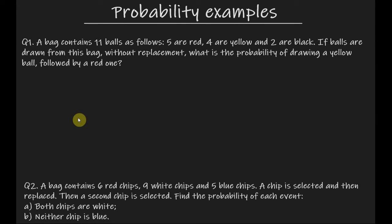Welcome everyone! In this video we will go through three different examples based on probability. The probability of an event is a real number in the range of 0 to 1, where a probability of 0 is assigned to an event that is impossible and a probability of 1 for a certain event. Let's get started with our examples.